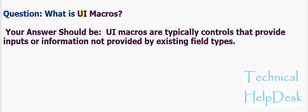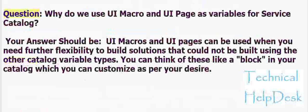Question: What are UI macros? Your answer should be: UI macros are typically controls that provide inputs or information not provided by existing field types. Question: Why do we use UI macro and UI page as variables for service catalog? Your answer should be: UI macros and UI pages can be used when you need further flexibility to build solutions that could not be built using the other catalog variable types. You can think of these like a block in your catalog which you can customize as per your desire.